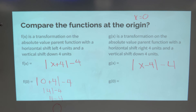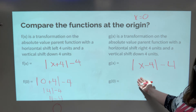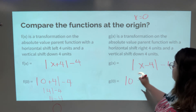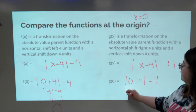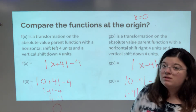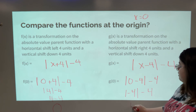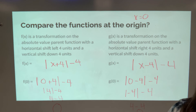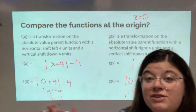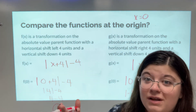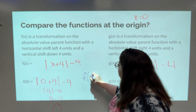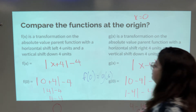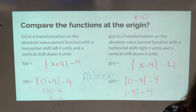Evaluating g(0): absolute value of (0 minus 4) minus four — that's absolute value of negative four minus four. Absolute value always turns something positive, so that's four minus four equals zero. So g(0) also equals zero. Both functions equal zero at the origin. We can say f(0) equals g(0) — they're equal when x equals zero.